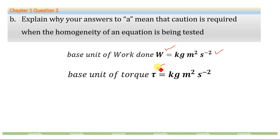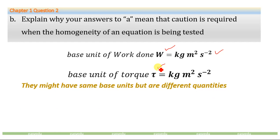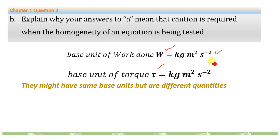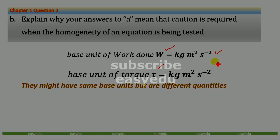So you must be cautious when checking the homogeneity of an equation. Two quantities may have the same base units but be completely different quantities — one scalar and one vector. Caution is therefore required when checking homogeneity. Thank you for watching, and don't forget to subscribe for more videos.